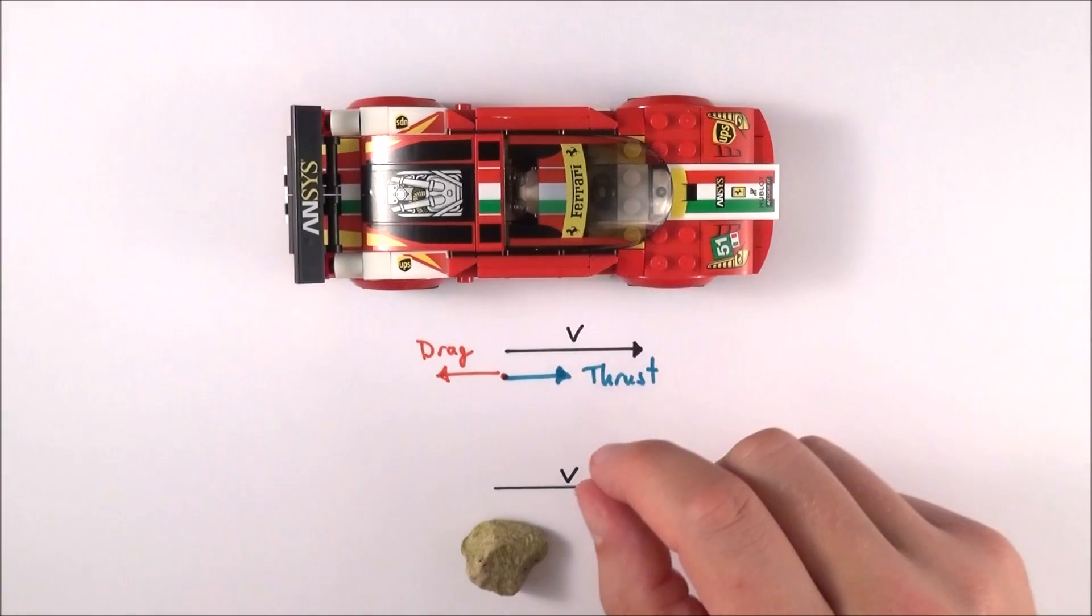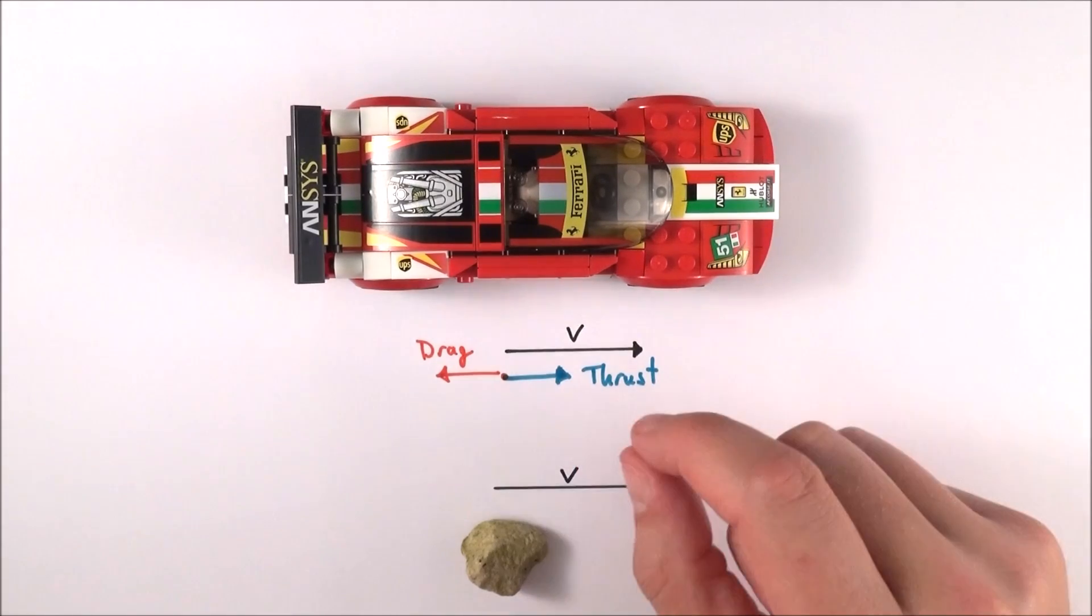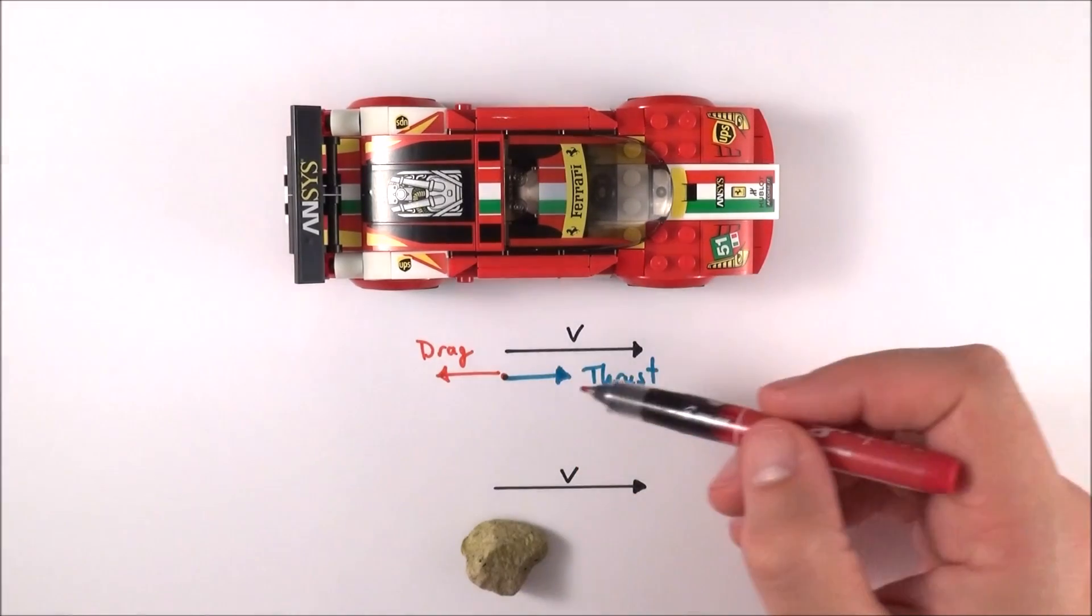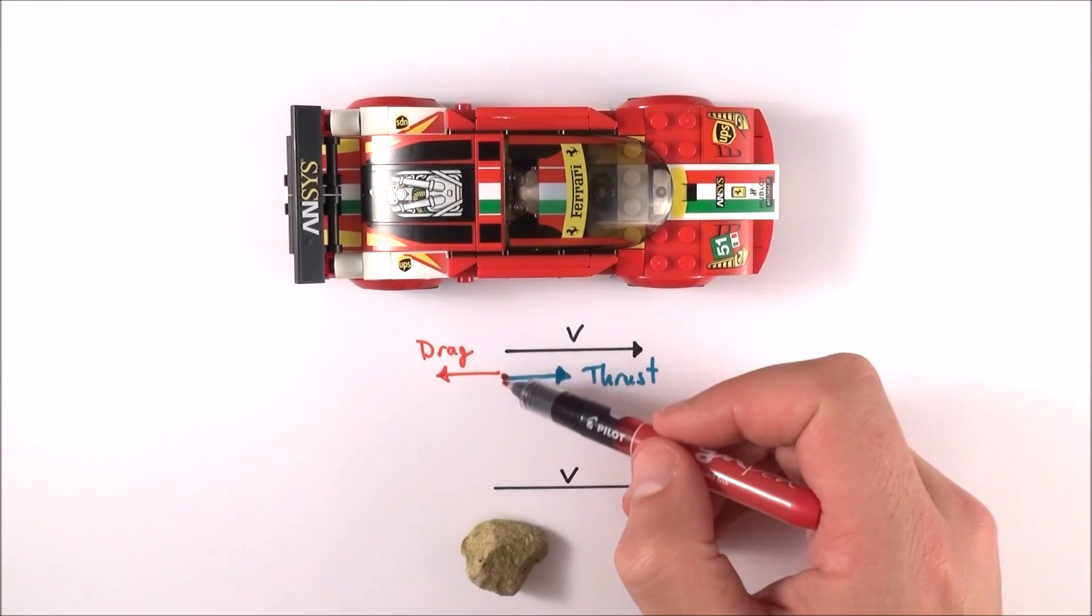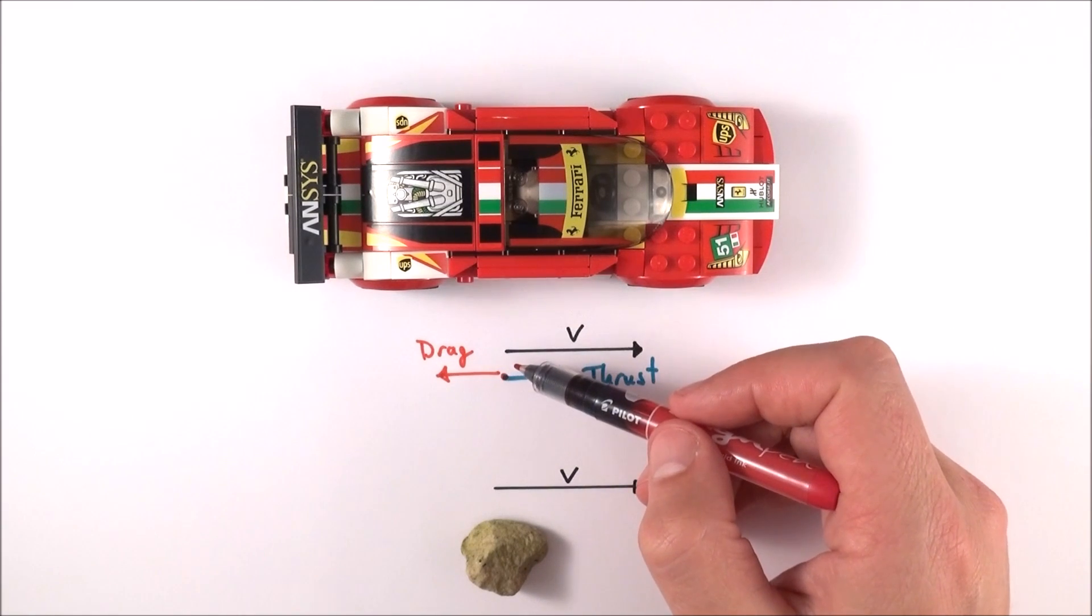And this is a really good example of Newton's first law. An object is going to keep moving with a constant velocity provided there's no net force acting on that object.